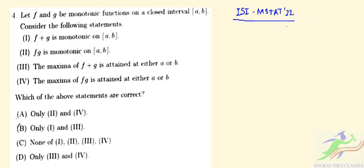Question number 4 states: let f and g be monotonic functions on a closed interval [a, b]. We have to find which of the statements 1, 2, 3, 4 are correct.